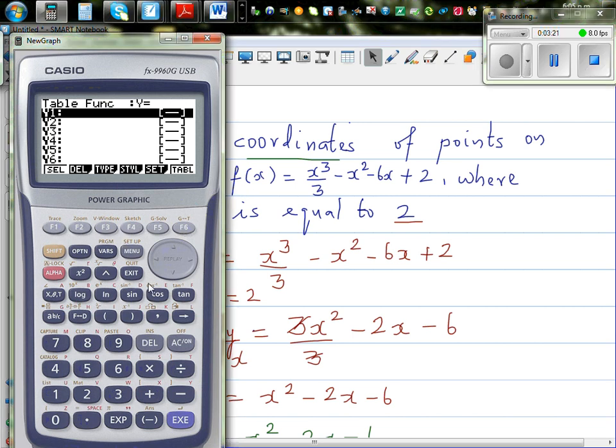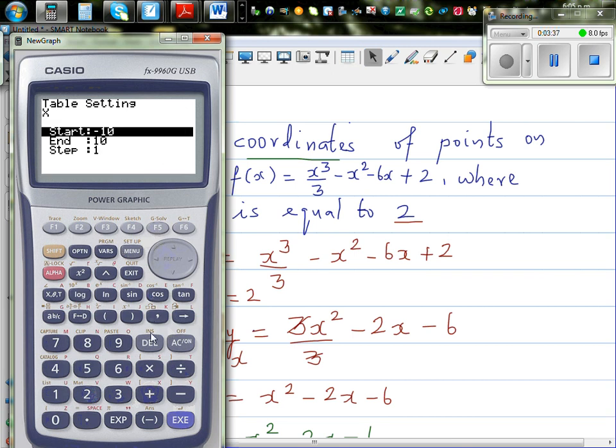Let me delete this, and type in the equation. So I can give x, x cubed, divide by 3, minus x squared, minus 6x, plus 2. I'll set my table from minus 5 to plus 5.